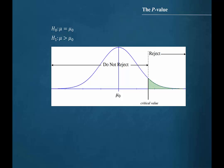The hypotheses stated here indicate a right-tailed hypothesis test about a hypothesized mean mu sub zero. The graph shows us the rejection region to the right of the critical value and the region to the left of the critical value where the null hypothesis would not be rejected. Alpha is the area in the tail of the distribution outside of the critical value.